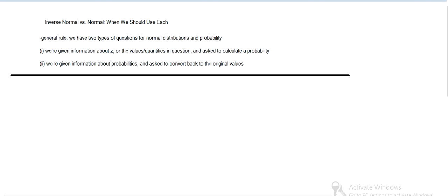I've got a question from a student about inverse normal versus normal, or the different types of questions we have about normal distributions. The general rule is there are two different types of questions: we're either given information about Z or about the values and then asked to calculate probabilities, or the other way around—given information about probabilities and asked to convert back to the original values.